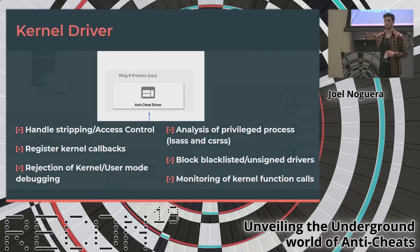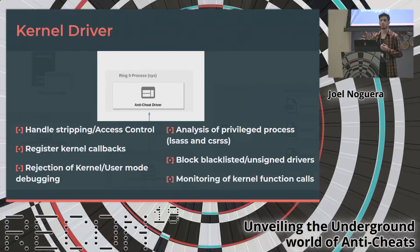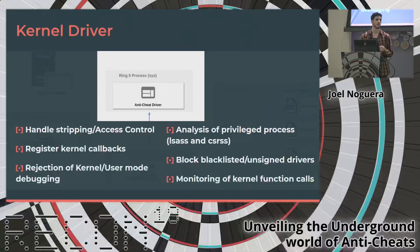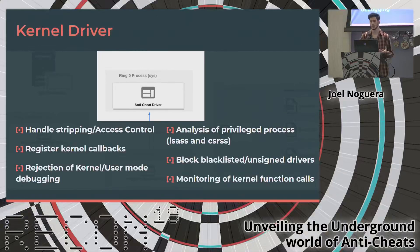Then we have the most powerful part of an anti-cheat: the driver running in Ring Zero. This driver gives them a lot of power — they can register different kernel callbacks so that when a new event appears on the system, like a process being created, they can execute pre and post operations. For example, if a process is trying to get a handle to the game process, they can downgrade that handle or reject the access so another process cannot manipulate the game's memory. They also control different flags in kernel structures to detect if kernel or user-mode debugging is occurring, and manage protections for key services like LSASS and CSRSS.